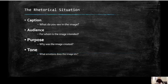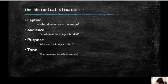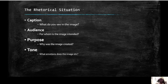We are going to use a college level strategy called the rhetorical situation, but we're only going to use part of it, tweaked a little bit for 11th grade or whatever high school grade you are. The rhetorical situation is a way that you critically think about a picture that you are looking at — so you analyze it. The components we'll use today are: the caption — what do you see in the image; the audience — for whom is the image intended; the purpose — why was this image created; and the tone — what emotions does the image stir when you look at it?